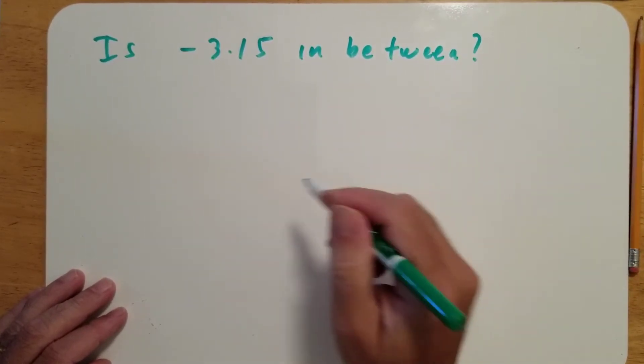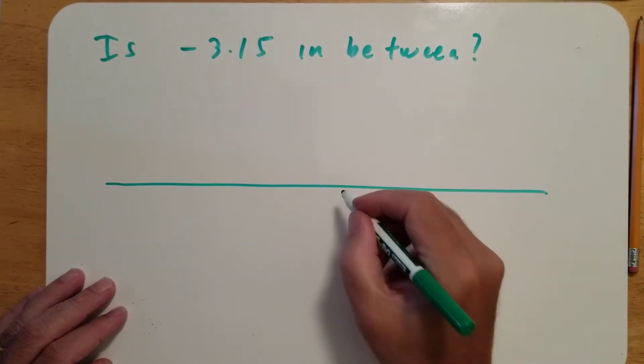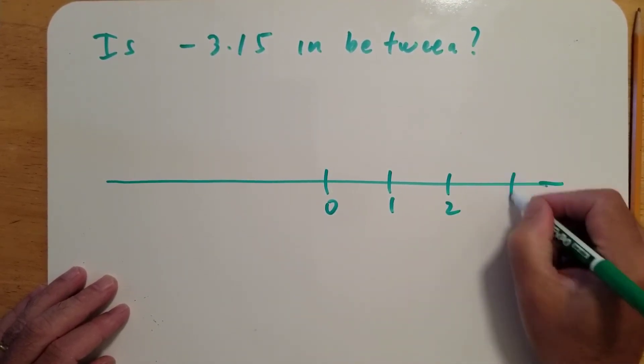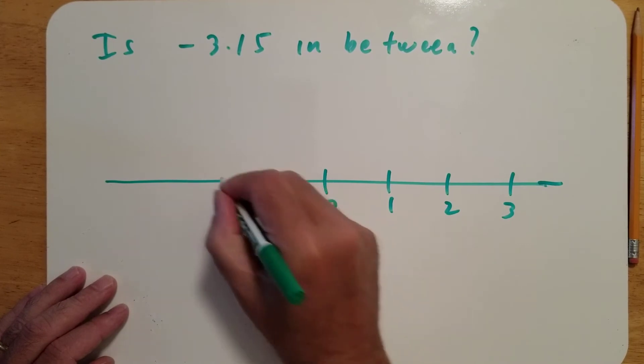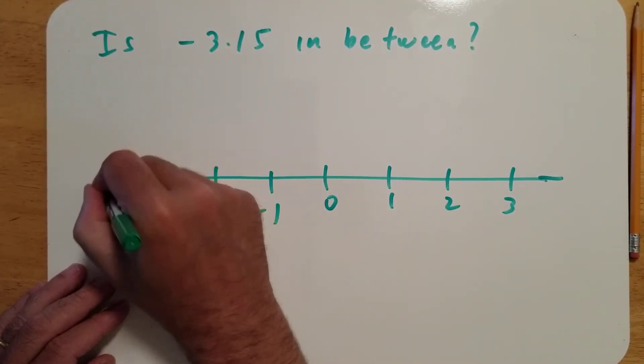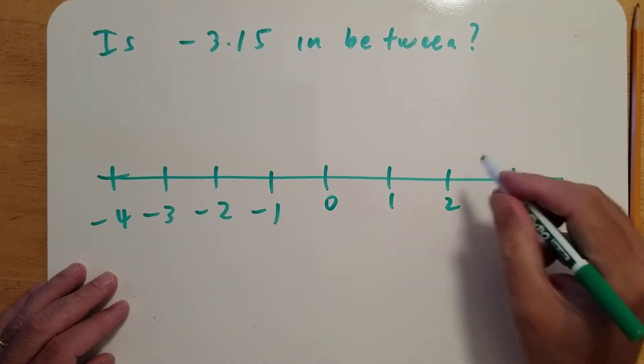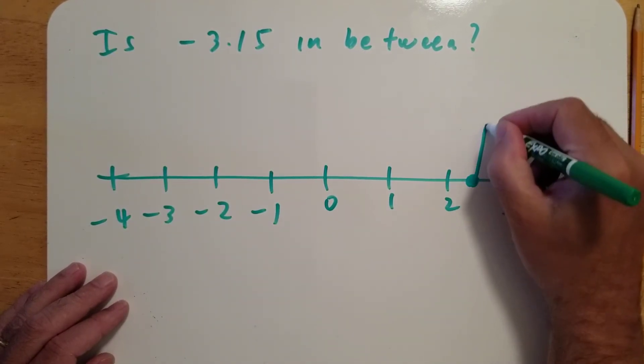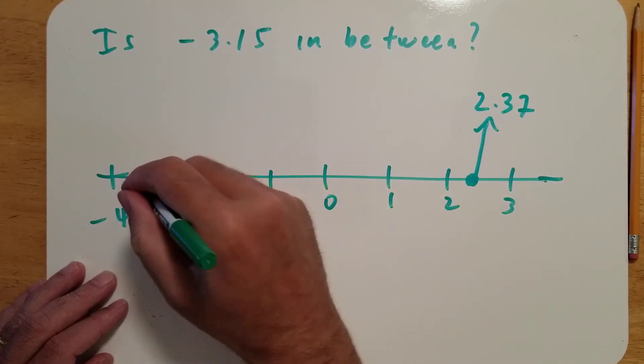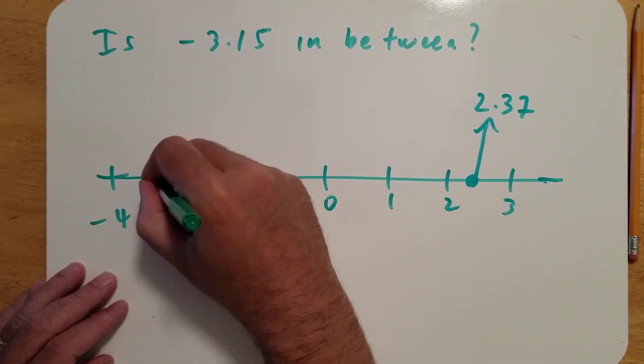And again, I'm going to draw that number line that I've been using. Here's zero, one, two, three, negative one, negative two, negative three, negative four. The two numbers were 2.37, about there, and negative 3.14, which I think is about there.